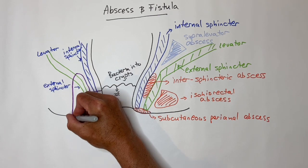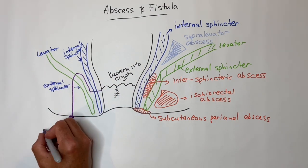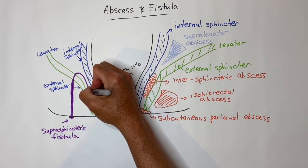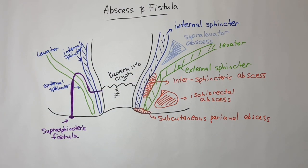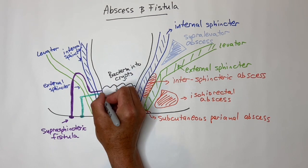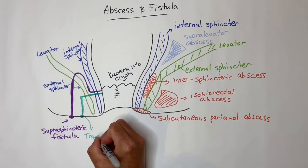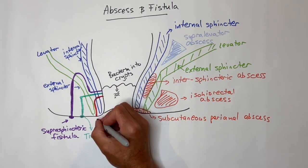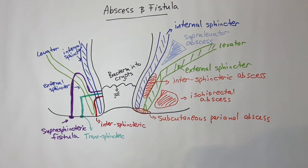Classification of fistula in ano again depends on the sphincter muscles. Suprasphincteric is above the sphincters. Transsphincteric traverses right through the sphincters. Intersphincteric runs between the internal and external sphincters. Submucosal doesn't go past the muscle at all.